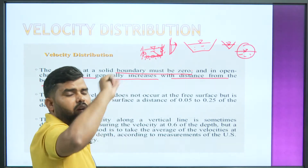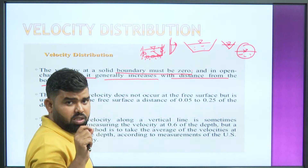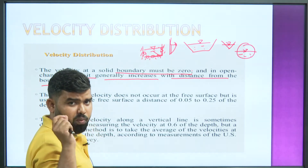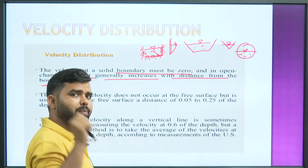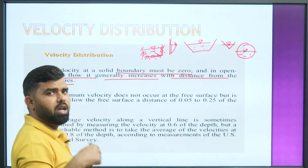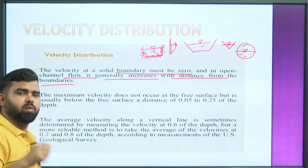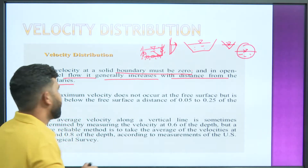We need to draw how much velocity is increasing. If those values are written and a graph is drawn from them, it will form a profile — and that is what we call velocity distribution.